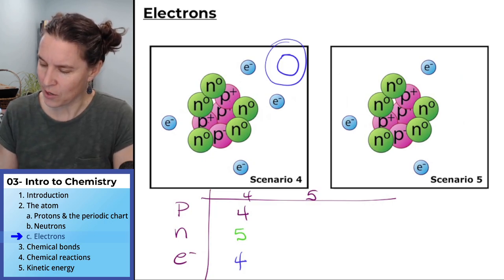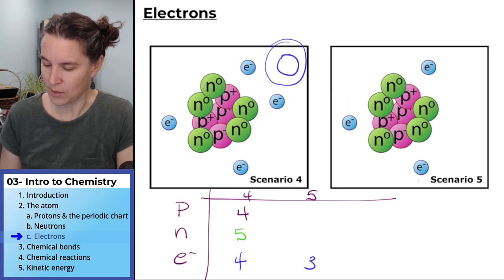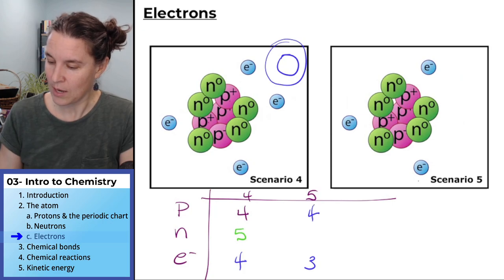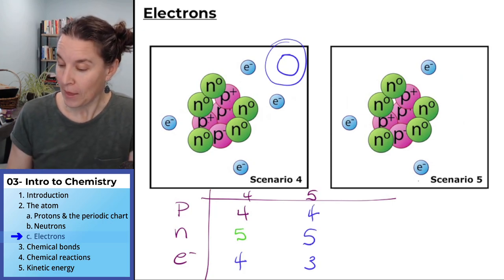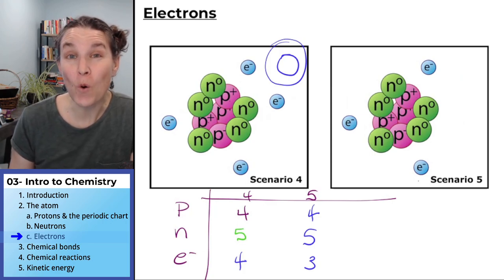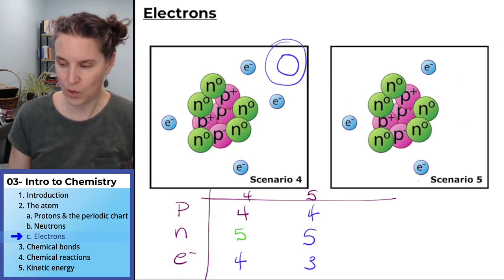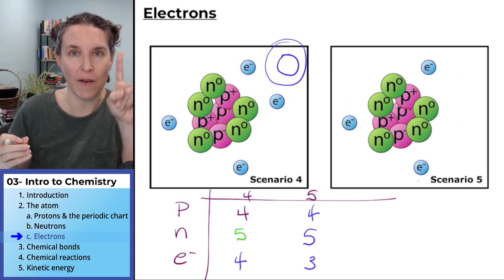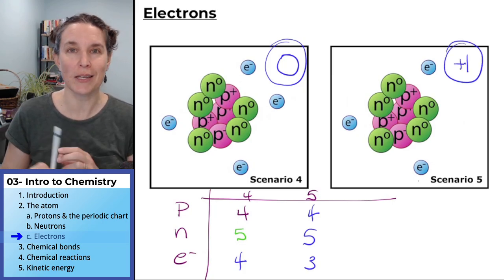Let's look at scenario five. We lost a bunch of electrons. We're down to three electrons. One, two, three, four protons and one, two, three, four, five neutrons. In this case, we have one more proton than electron. So three of our electrons cancel out three of our protons, but we have one more proton remaining. So our net charge is positive one.